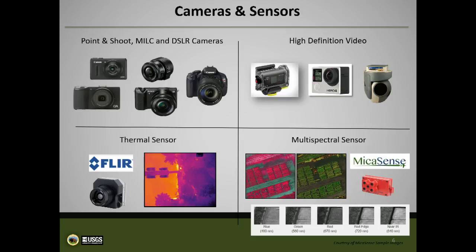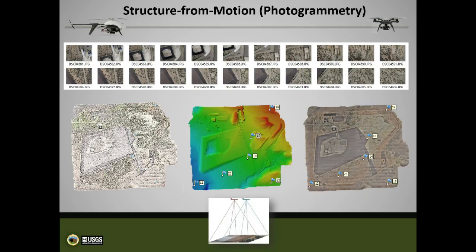You'll hear computer vision and structure from motion — these are just buzz terms. It's really just photogrammetry. We take overlapping images and mosaic them together. Traditional photogrammetry software was $50,000 to $70,000 a year to keep licenses going. This new software is $3,000 — very doable on a local scale. We can create point clouds, elevation surface models, and the corrected orthophoto image from that. Flying at 400 feet with just a little point-and-shoot camera, we're getting down to two to three centimeter ground sample distance. If we lay down ground control, we can get elevation down to about seven to nine centimeter in the vertical.